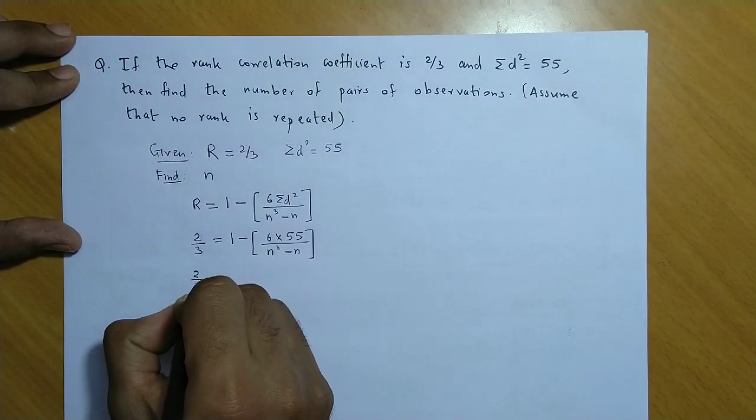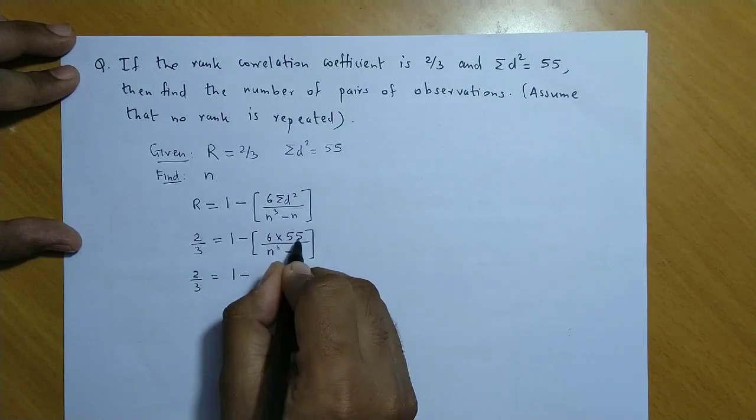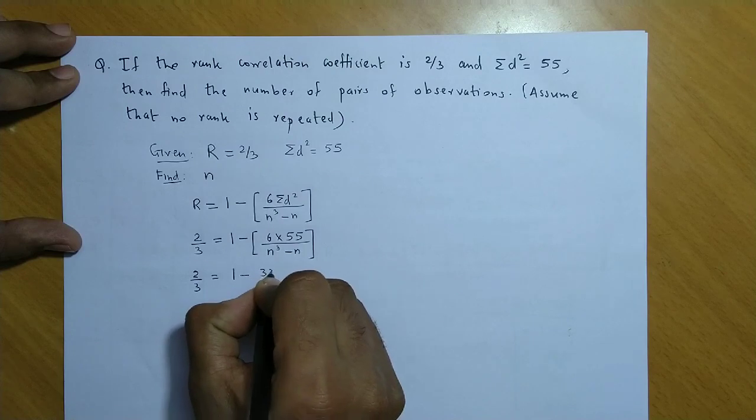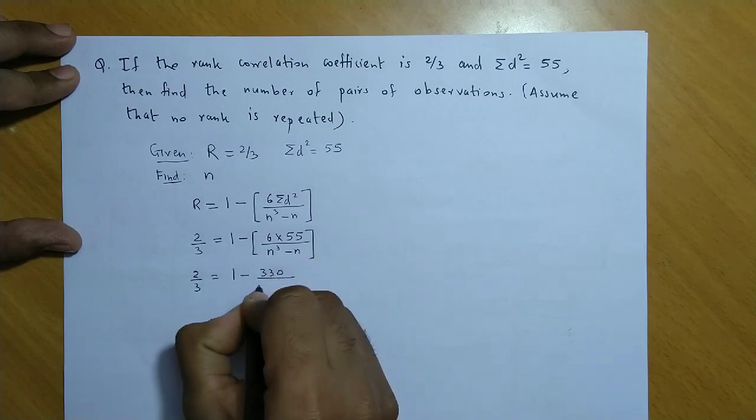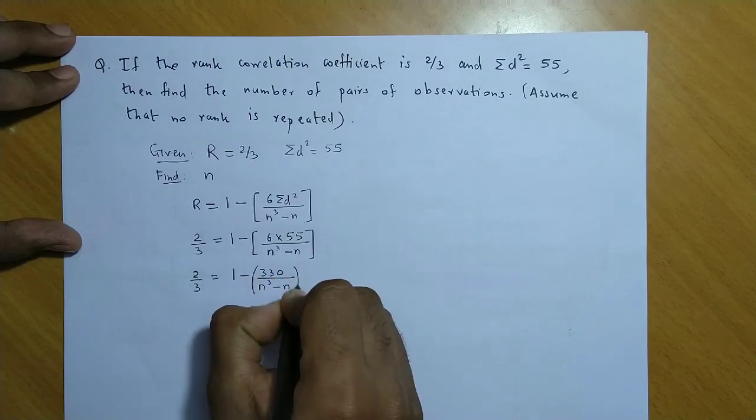So, further hume value milti hai. 2/3 equal to 1 minus... Now, 6 into 55 ye ho jayega 330 divided by n cube minus n.